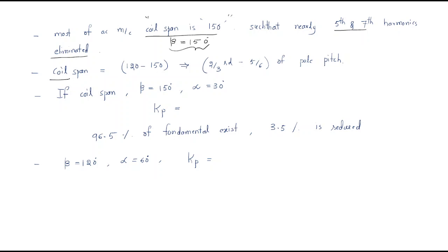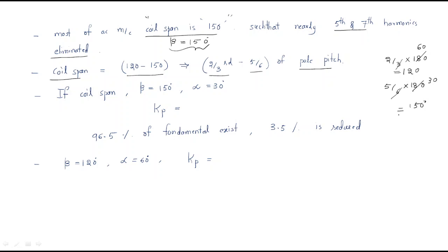Generally, coil span is between 120 degrees and 150 degrees. That is, two-thirds of the pole pitch — which is two-thirds of 180 degrees — giving 120 degrees, and five-sixths of the pole pitch — five-sixths of 180 degrees — giving 150 degrees. So coil span ranges from two-thirds to five-sixths of the pole pitch.